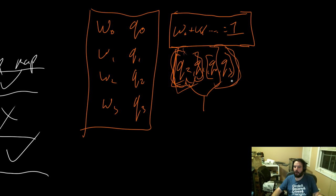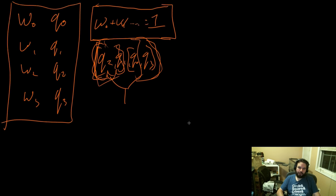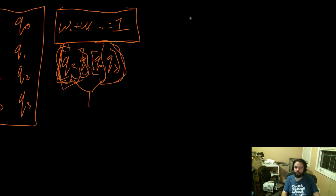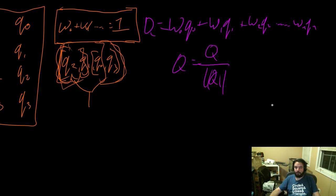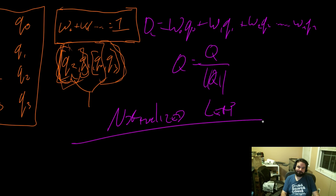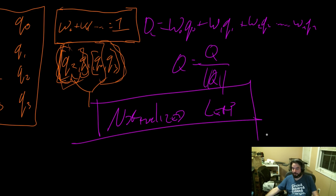What Casey figured out — and I believe he's the first to do it — is you just sum up all your weight*quaternion terms, get a big Q at the end, and then normalize it. Done. That's called normalized lerp, or NLERP.